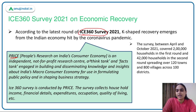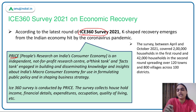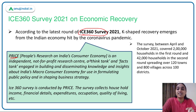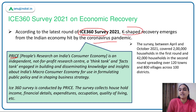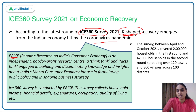In 2021, April to October, a survey was conducted with around 2,000 households in the first round and 2,000 households in the second round, spread across 120 towns and around 800 villages in India. After collecting income details, expenditure details, quality of living details, and financial details, the survey concluded that a K-shaped recovery is emerging from the Indian economy hit by the coronavirus pandemic — with some people's income increasing and some decreasing.